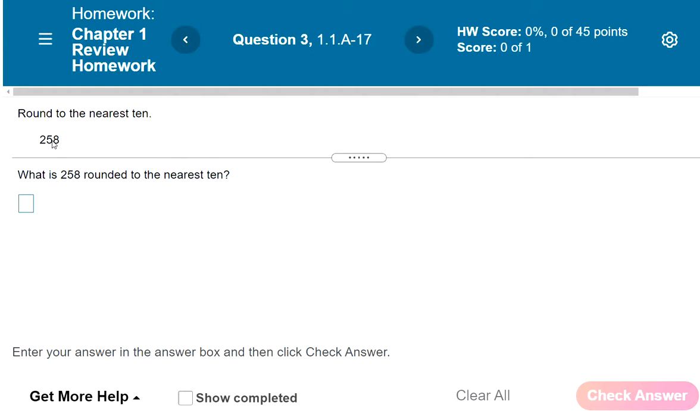So we're asked to round to the nearest ten. The five is in the tens place, right, because it goes ones, tens, hundreds.